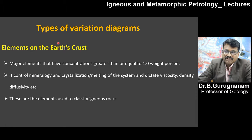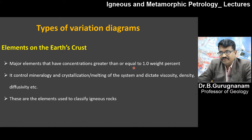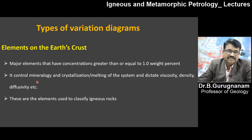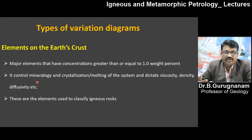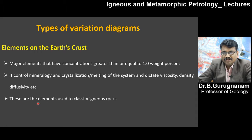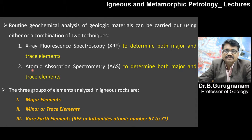To understand variation diagrams, we first study the elements in the Earth's crust. If the concentration is equal to or more than 1 percent, it is taken as a major element. Major elements with concentration greater than or equal to 1 to 5 percent control the mineralogy of a particular rock. By using them, we coin the name of the rock type. Major elements control the mineralogy, crystallization, melting of the system, and dictate viscosity, density, and diffusivity of the rock.